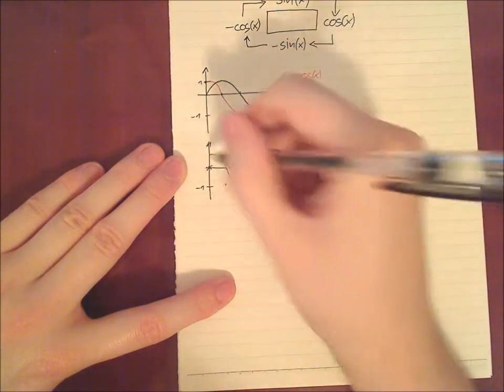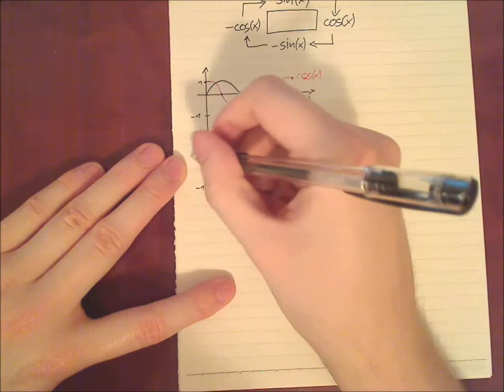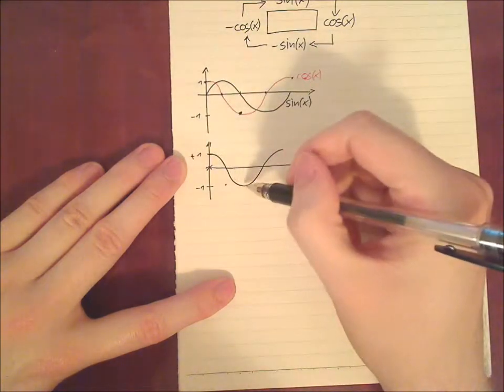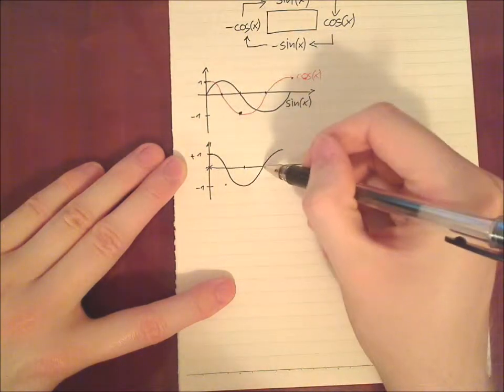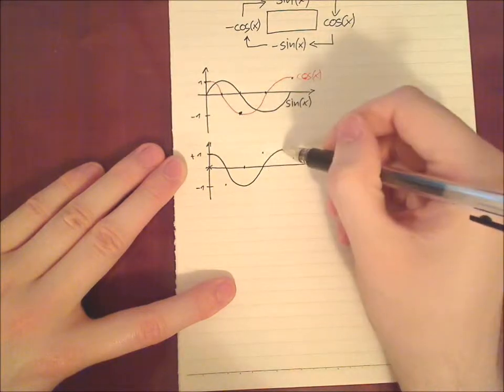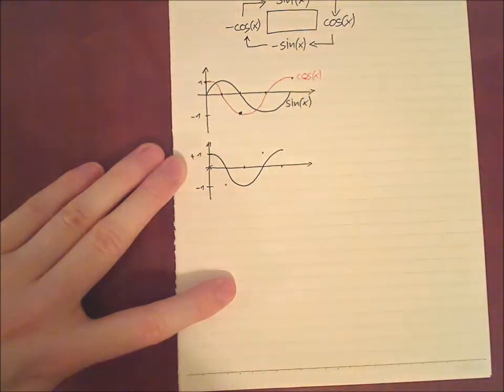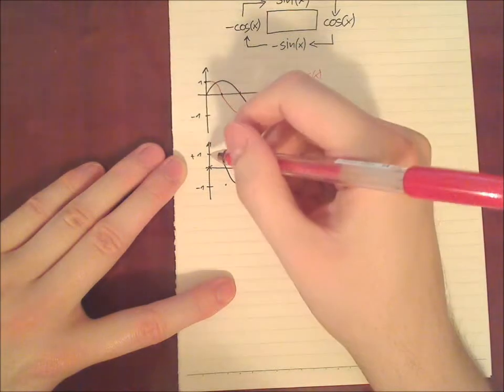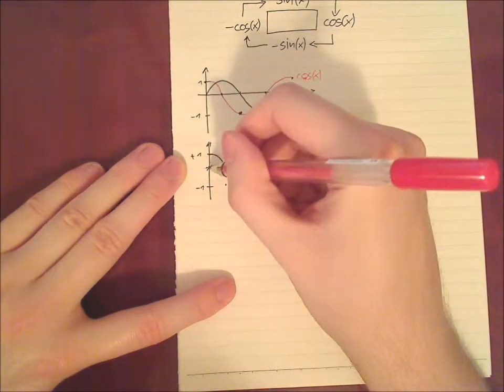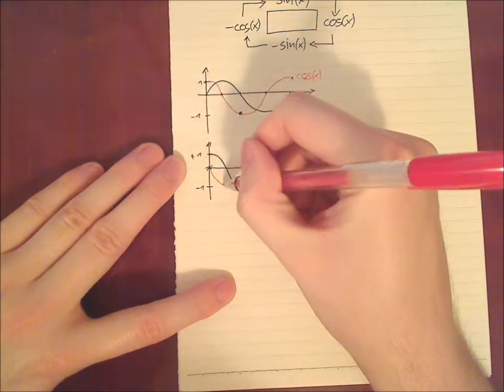that's for sure. Here we have negative maximum slope. So minus one, one plus one. Here we have zero again. So something like this. Here maximum positive slope again. Here zero slope again. So the way it looks like is something like this.